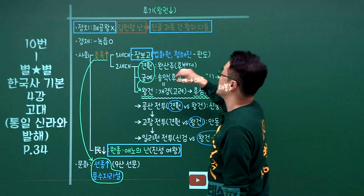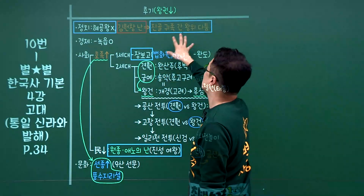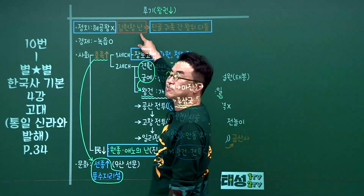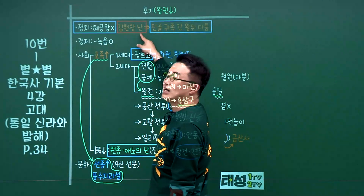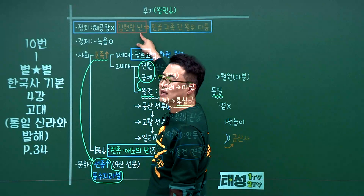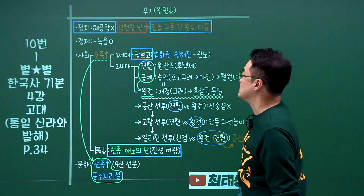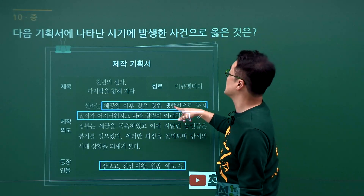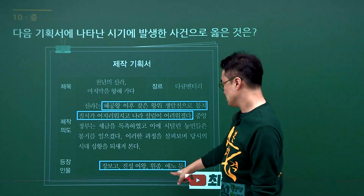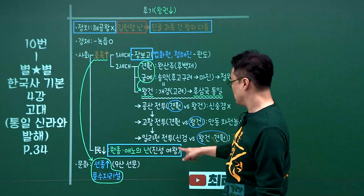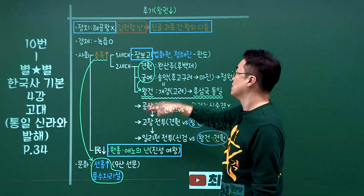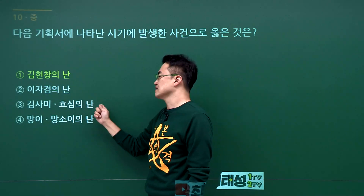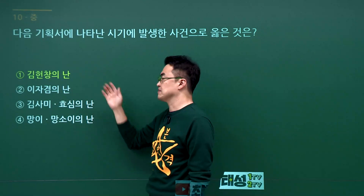통일신라 말기 상황 문제입니다. 진골 귀족과 왕의 다툼, 장보고의 활동, 원종과 애노의 난이 신라 말기 상황입니다. 통일신라 초기는 김헌돌의 난, 통일신라 말기는 김헌창의 난으로 구분합니다. 문제에서 혜공왕, 왕위쟁탈전, 장보고, 진성여왕, 원종 애노가 등장했으니 통일신라 말기입니다. 정답은 김헌창의 난 1번입니다. 이자겸의 난, 김삼이 효심의 난, 망이 망소이의 난은 모두 고려시대입니다.